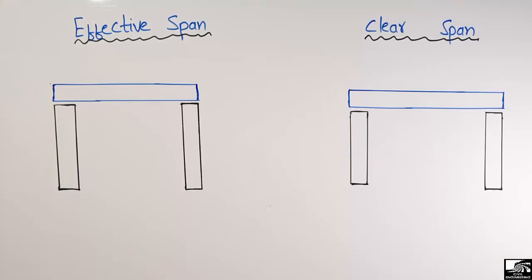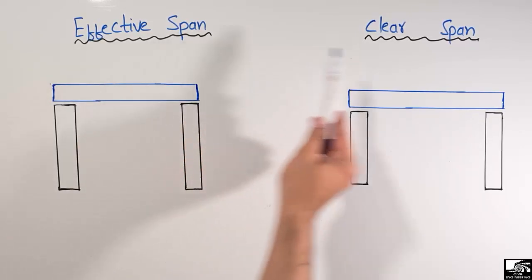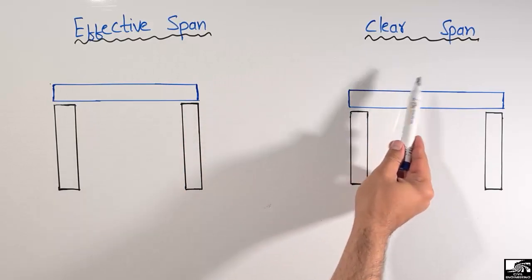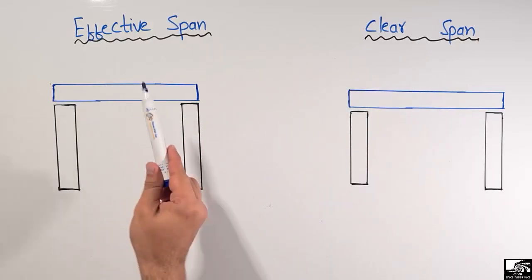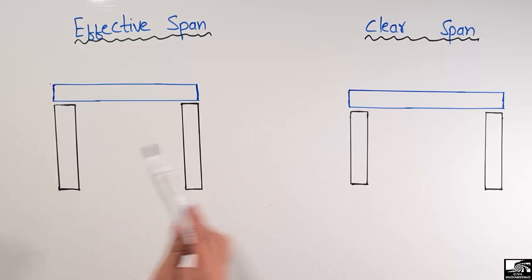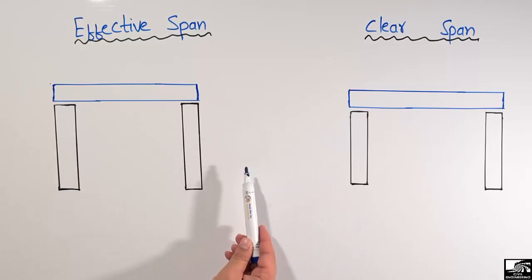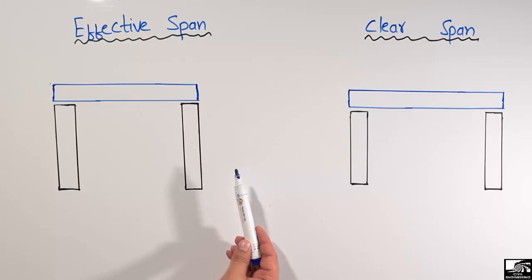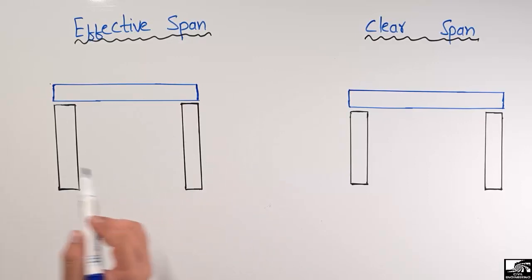Hello guys, welcome back to the Seven Engineering YouTube channel. Please subscribe to our channel for daily Seven Engineering videos. Today's lecture we are going to differentiate between two types of spans: the effective span and the clear span. I would like to explain this difference with the help of an example in order to understand it easily.